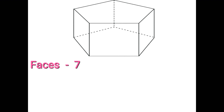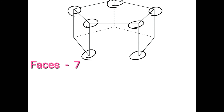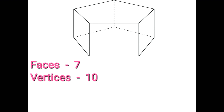Next is vertices. Number of vertices is 10. There are 10 points altogether on the pentagonal prism: 1, 2, 3, 4, 5, 6, 7, 8, 9, 10. I am getting 10 points — that is vertices. Vertices is 10.